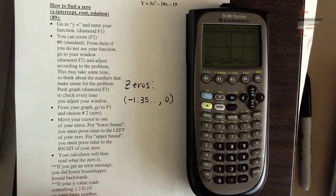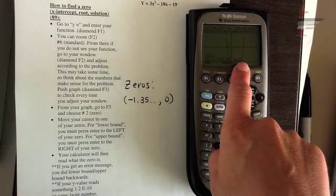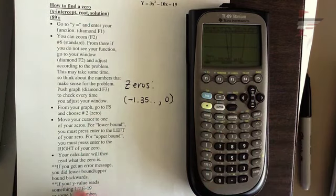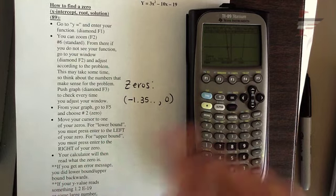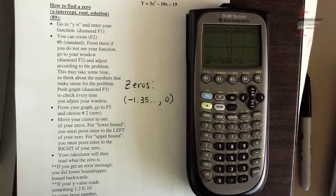Another thing, if you get a y value that reads something like, instead of zero, it says like 1.2e to the negative 19, that's essentially zero. So you're fine. And every once in a while, it just can't quite compute that zero for you exact. And that's obviously good enough.